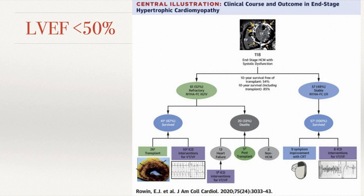LV EF less than 50% is a factor added in the 2020 AHA guidelines, not present in 2011. A study by Rowan et al. looked at 118 patients with end-stage or burnt-out HCM with EF less than 50%, dividing them into minimally symptomatic (NYHA I-II) and more symptomatic (NYHA III-IV) groups, followed for about 10 years. The less symptomatic group had 100% survival; the more symptomatic had 33% deaths. However, regardless of which group, there were significant ICD interventions for VT/VF — meaning just having an EF below 50% increases risk of ventricular arrhythmias.